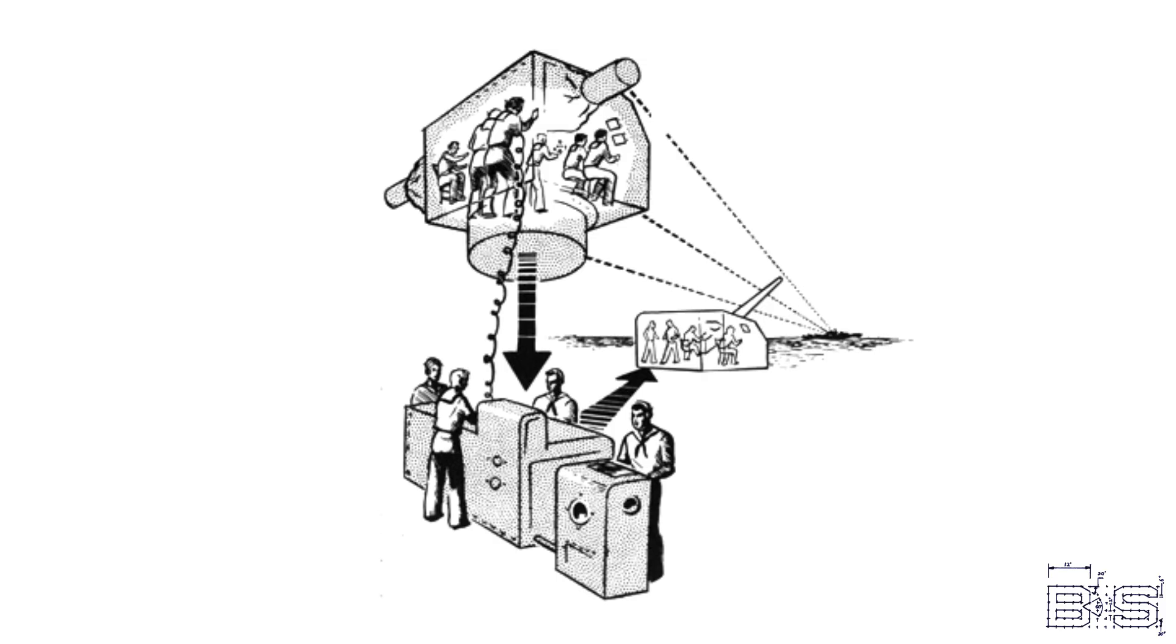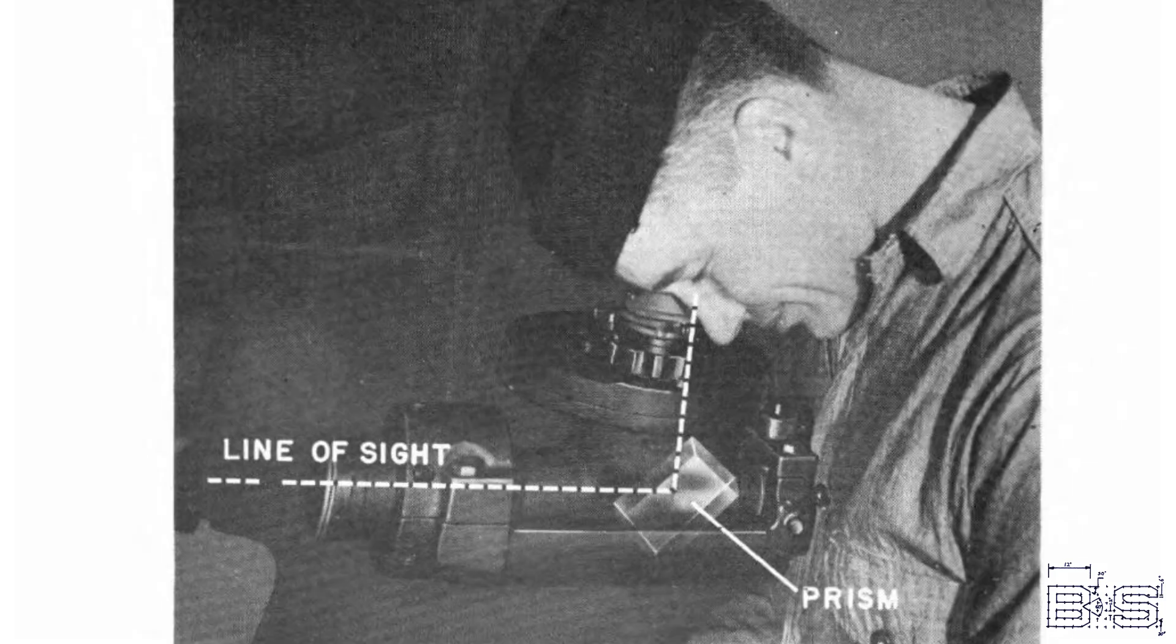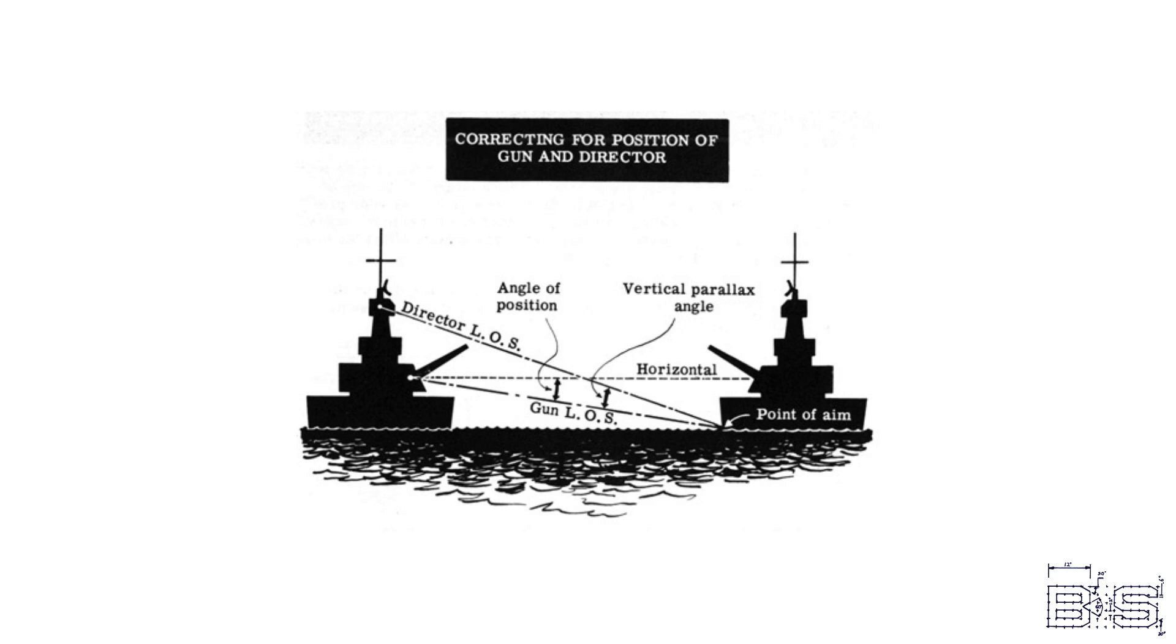If the target is close enough, we can look at it through the scopes in our director. In other words, we are looking through the line of sight. For surface targets, we always aim near the water line of the enemy vessel, so water can flood in and help sink the ship. All ballistic corrections are adjustments to this line of sight.